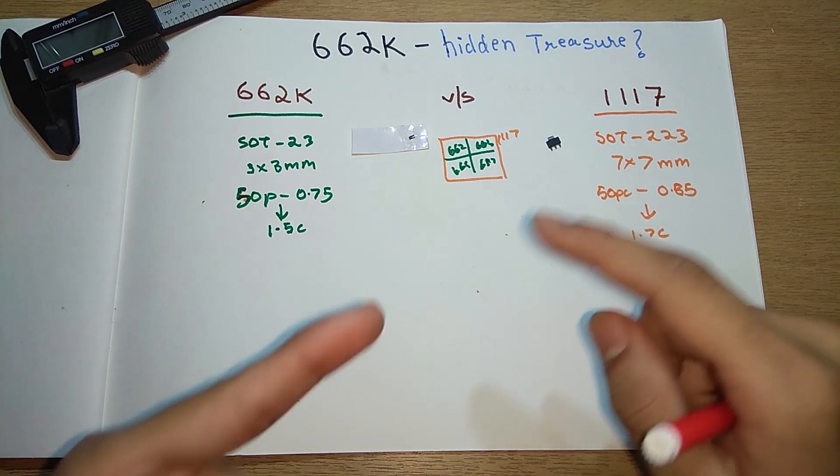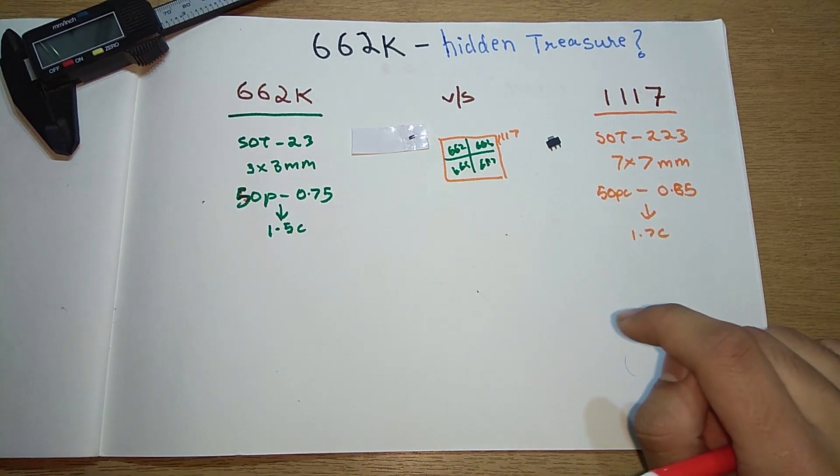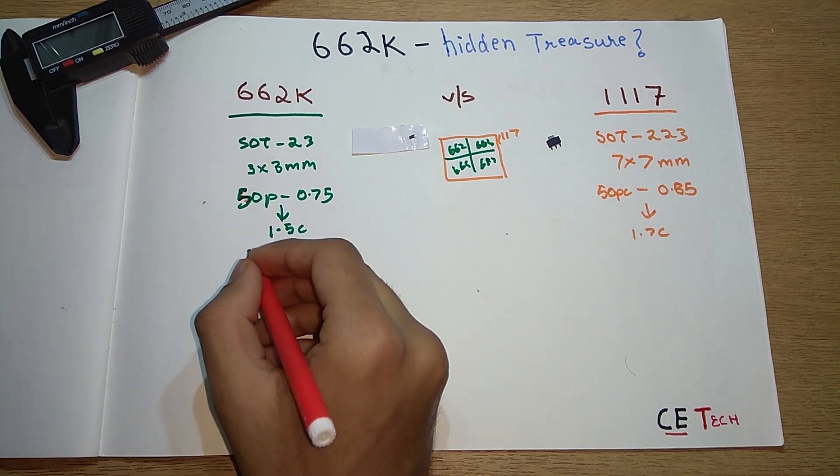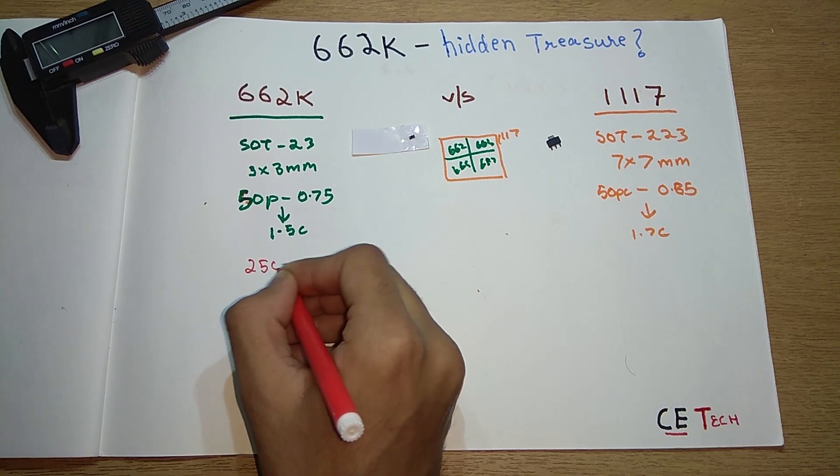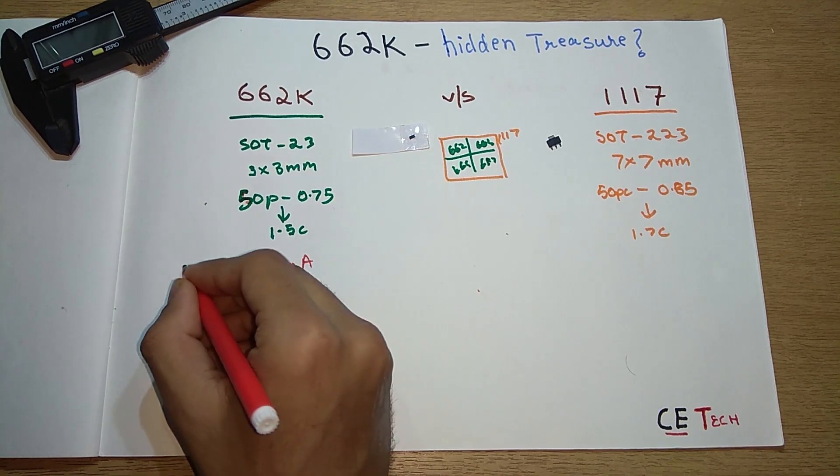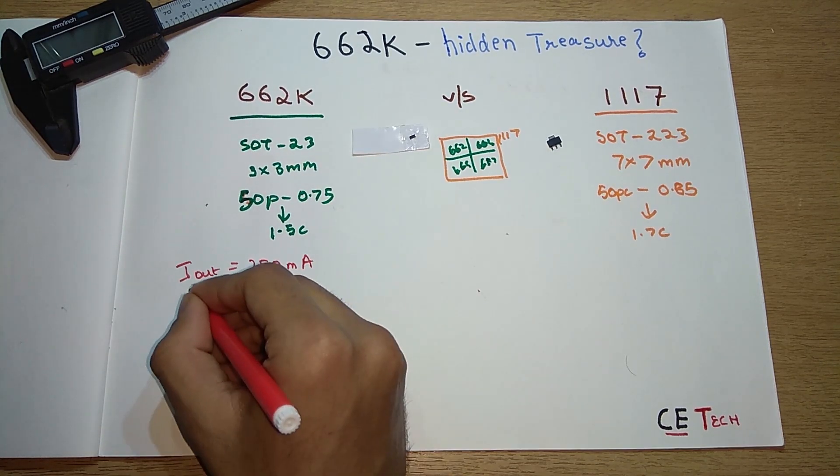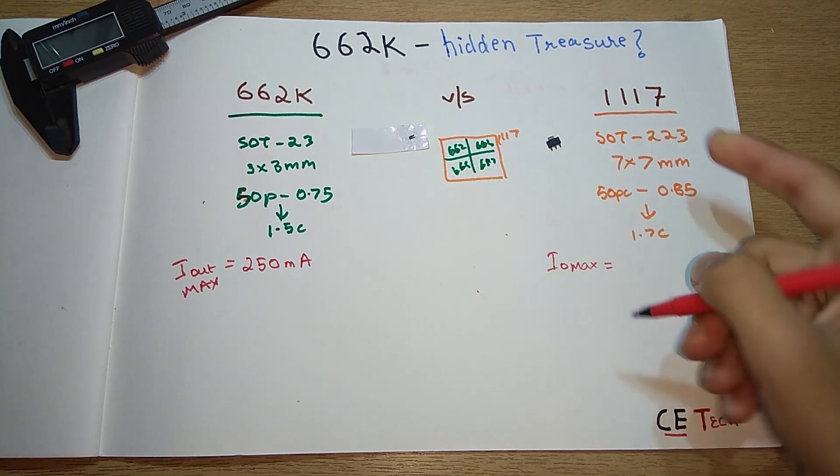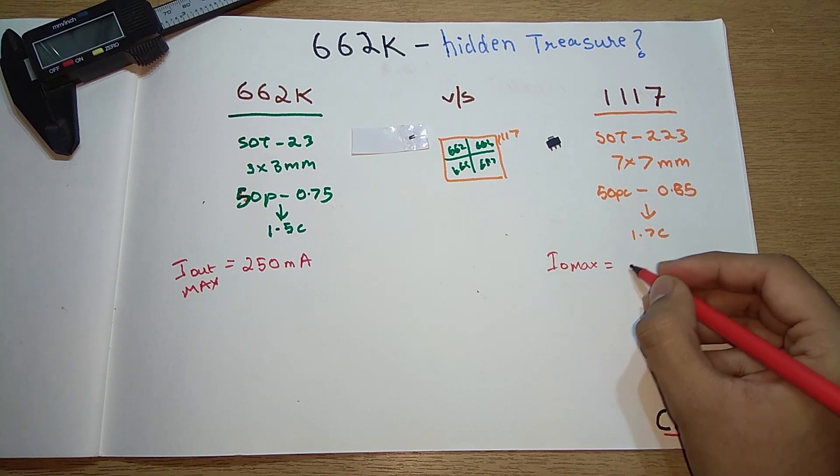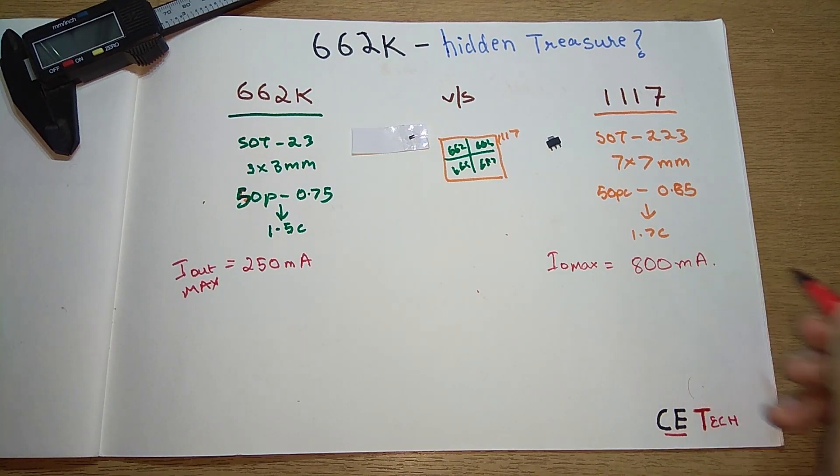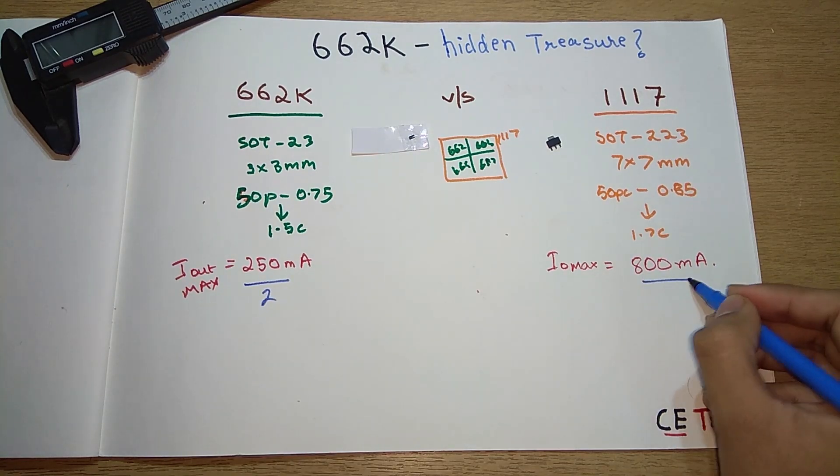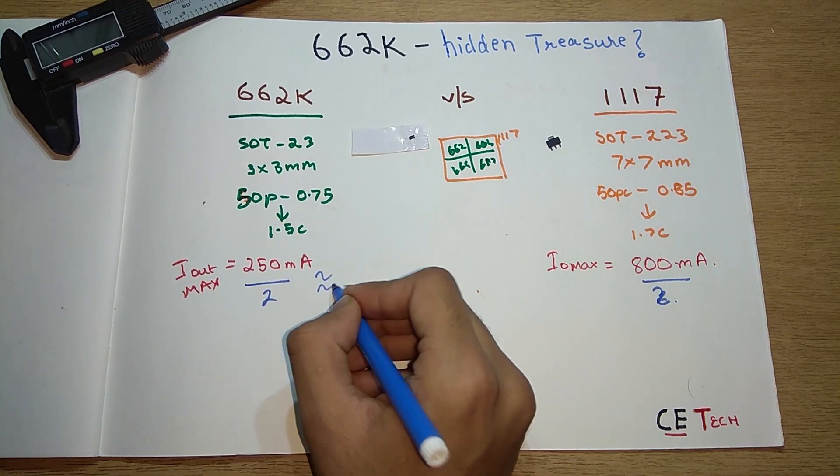The output current is different for both chips. The current for the 662K, as the datasheet publishes, is 250 milliamp max—I_out max—whereas I_out max for the 1117 is mentioned around 800 milliamps.